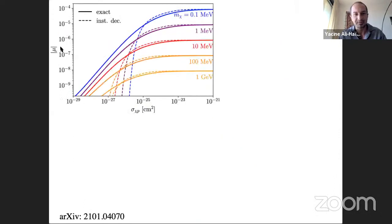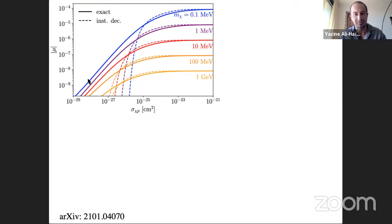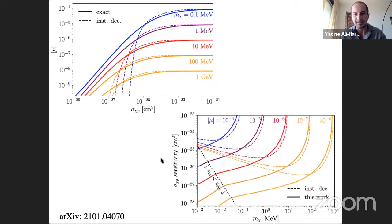This is shown in the chemical potential distortion as a function of dark matter-proton cross-section. With the instantaneous decoupling approximation you get nothing for low cross-sections and then a step function, but in reality there is a small-cross-section contribution to the chemical potential. The basic point is that at low dark matter masses you can probe much weaker elastic scattering cross-sections than the initial estimate suggested.